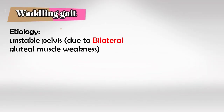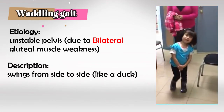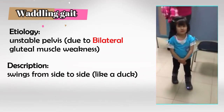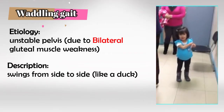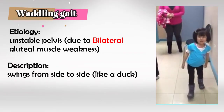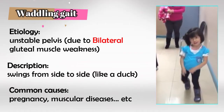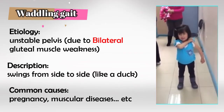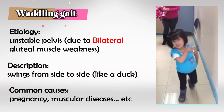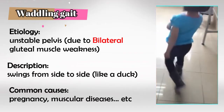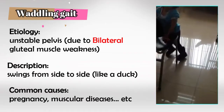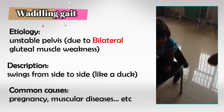Waddling gait is due to weakness of bilateral gluteal muscles. This will cause instability of the pelvis and the patient would waddle from one side to the other while walking. Common causes include muscular dystrophies or muscular diseases, pregnancy, and so on. Just think of something that would damage bilateral muscles at the same time.